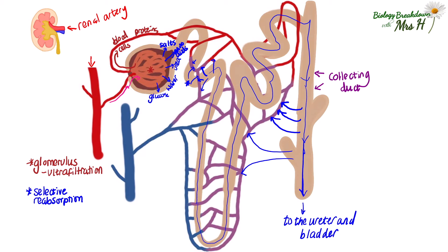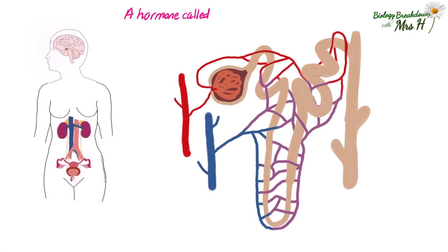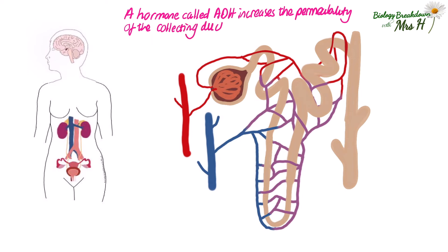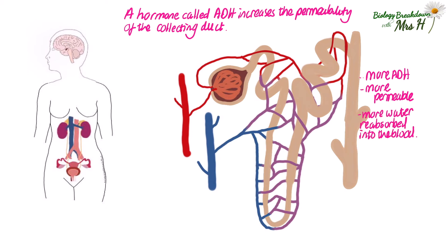More osmosis will happen if the collecting duct is more permeable. The less permeable the collecting duct, the less water will be able to move back into the blood by osmosis, meaning more water will be lost in the urine along with the urea. There is a hormone called ADH, which stands for anti-diuretic hormone — you don't need to remember that, so we'll just call it ADH. ADH increases the permeability of the collecting duct: more ADH means a more permeable collecting duct and more water reabsorbed back into the blood by osmosis.